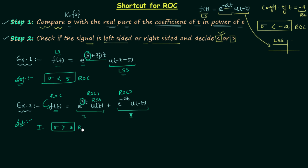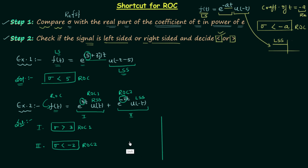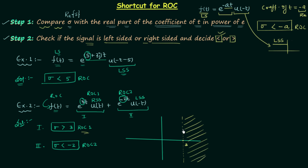For the second signal, e^(-2t)·u(-t), we compare sigma with the real part of the coefficient of t, which is minus 2. Since u(-t) is a left-sided signal, we use the less-than sign, giving ROC2: sigma less than minus 2. To find the common ROC, we plot both regions. For ROC1, we draw a line at sigma equal to 3 and shade all the region to the right, representing sigma greater than 3.